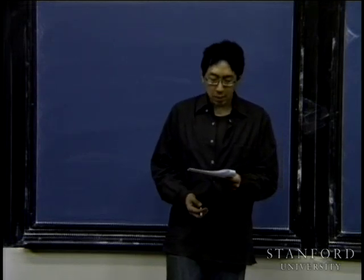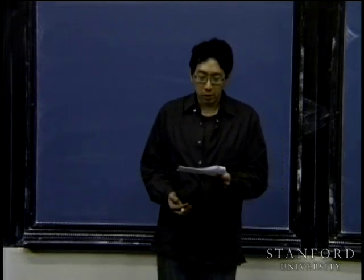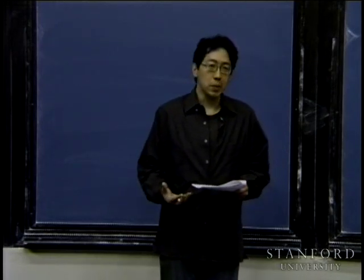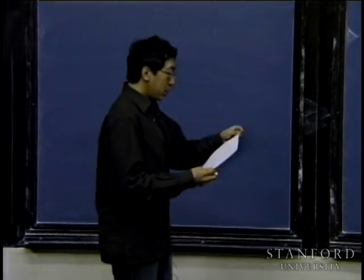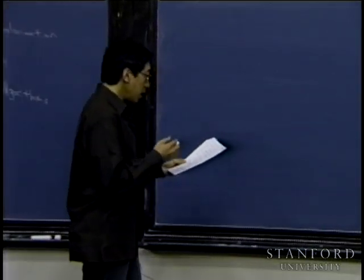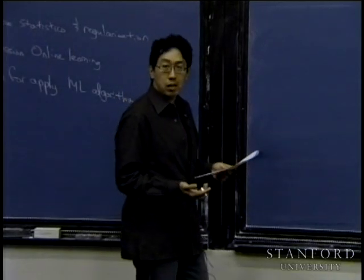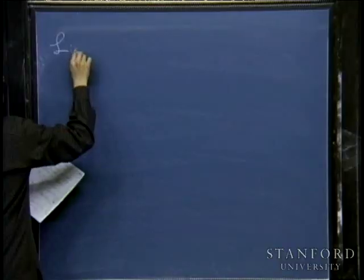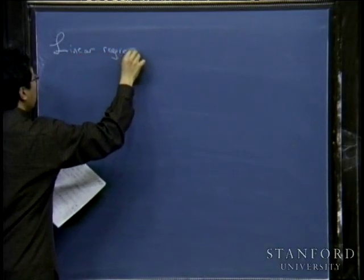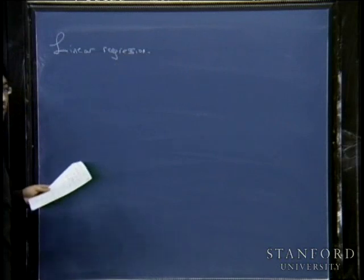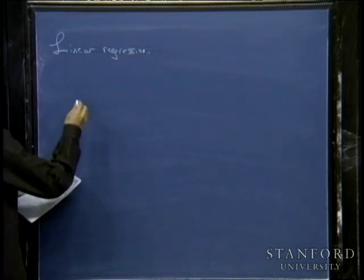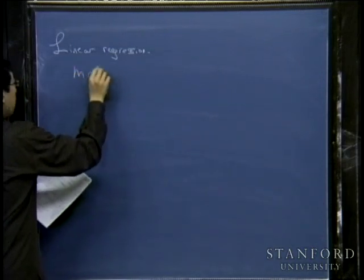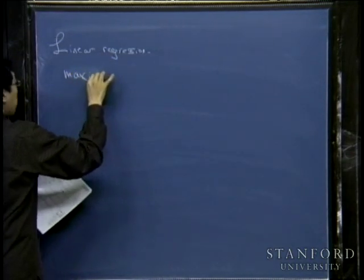What I want to do today is talk about a different way to prevent overfitting. It's a method called regularization and it's a way that lets you keep all the parameters. I'm going to illustrate this with linear regression — the very first model we learned about. We said that we would choose the parameters via maximum likelihood.